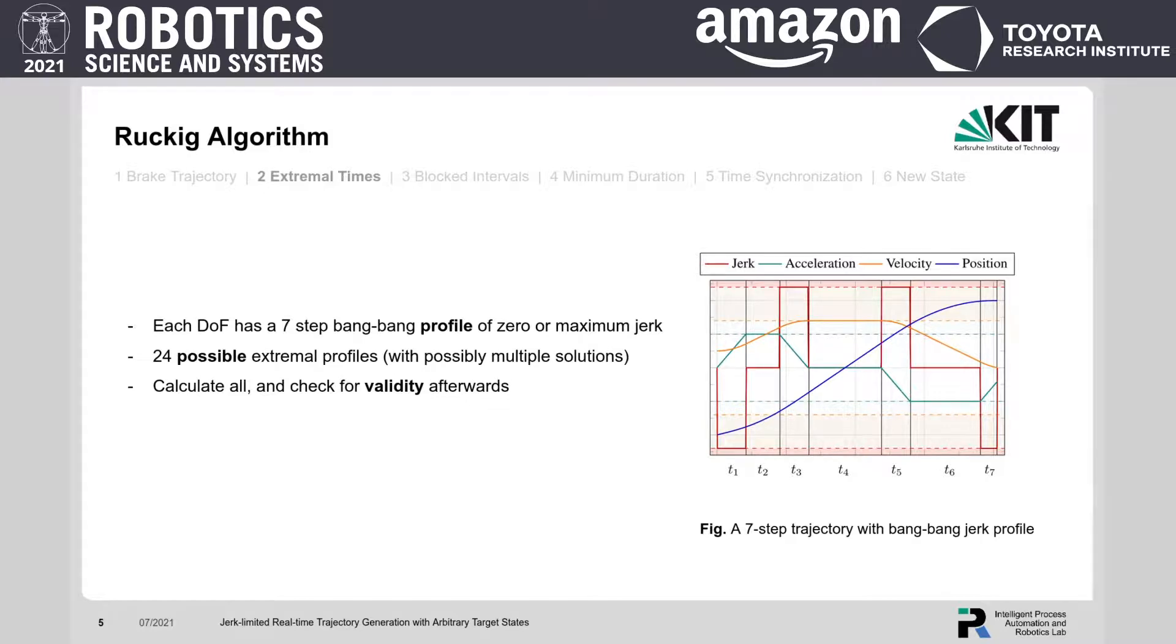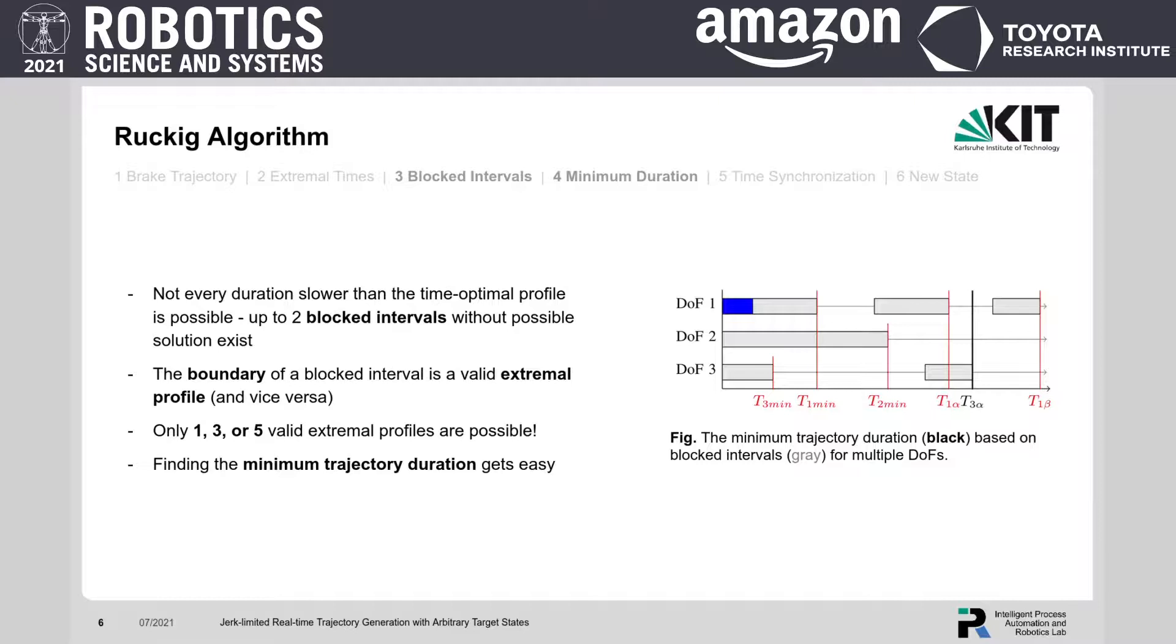However, when synchronizing multiple degrees of freedom, there is this issue of blocked intervals. Not every duration slower than the time optimal profile is possible, as up to two blocked intervals exist.